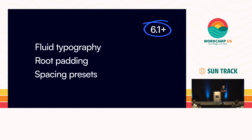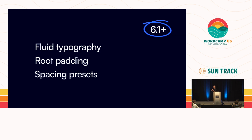Then we have spacing presets. Being able to define a scale or a ratio of space and have a consistent way to apply that in margin, padding, or even heights of certain blocks is very powerful. This is coming in 6.1 and it's fairly easy to implement — just a few lines within theme.json — or you can add your own custom spacing scale.